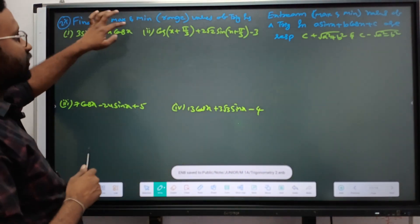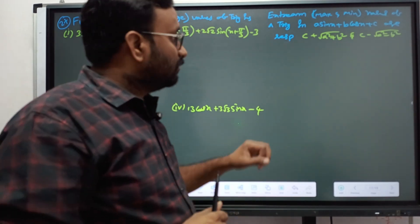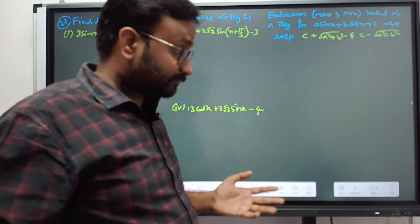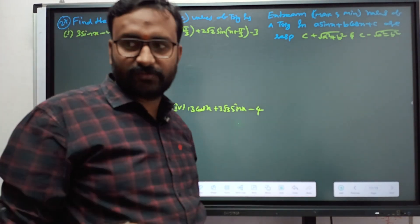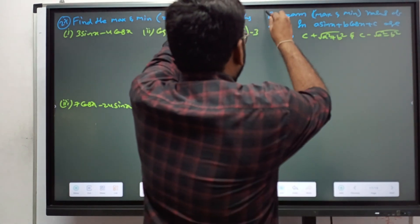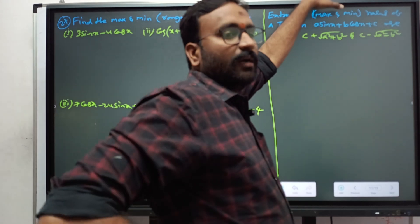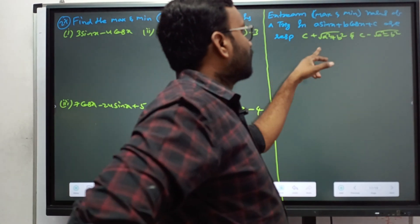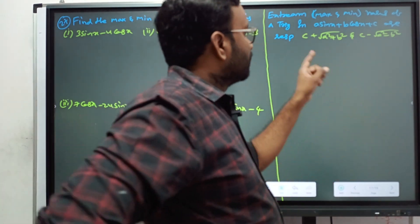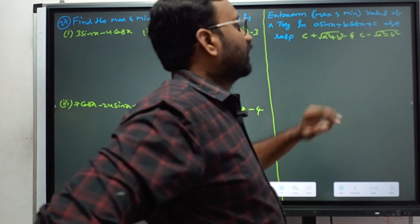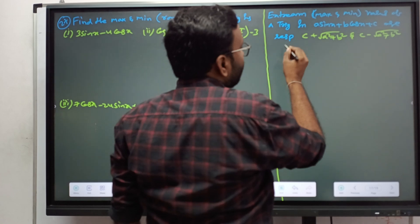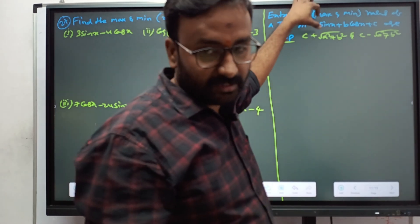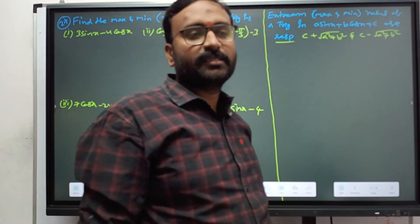Now, how do we find the maximum and minimum values — also called the range or extreme values — of a trigonometric function? We learn about range in functions. For a function of the form A sin x + B cos x + C, the maximum value is C + √(A² + B²), and the minimum value is C - √(A² + B²). We first need the function in sin x and cos x form, with the same angle.